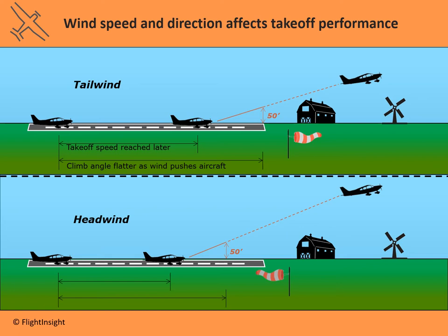Once off the ground with a headwind, you'll be able to climb at a better angle — the wind has a slight stopping effect on forward motion, allowing you to climb to a higher altitude without eating up as much horizontal distance, so your climb angle isn't as flat. The windsock is a helpful visual cue: think of it like a carrot — you always eat it from the narrow end first. In a takeoff, you want that narrow end of the windsock pointing at you, meaning you're taking off into the headwind, not the tailwind.